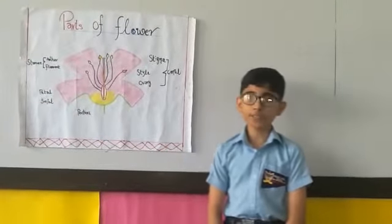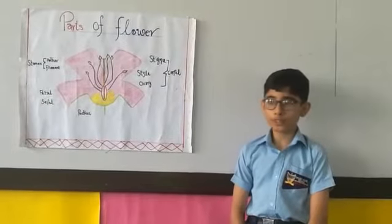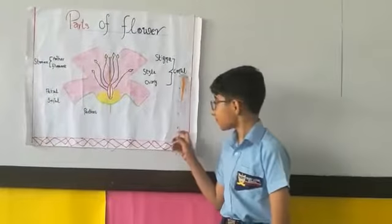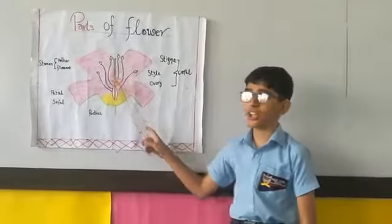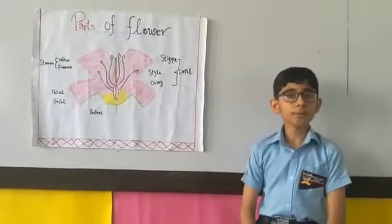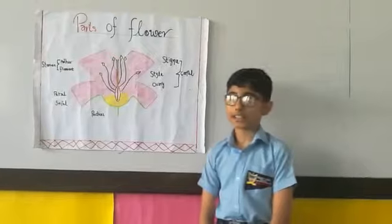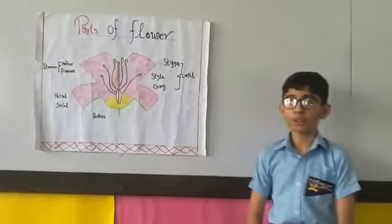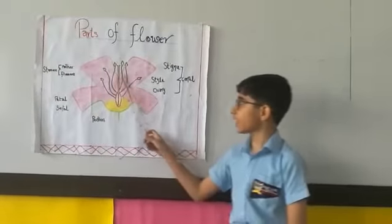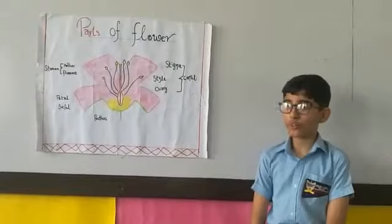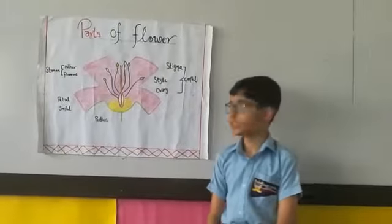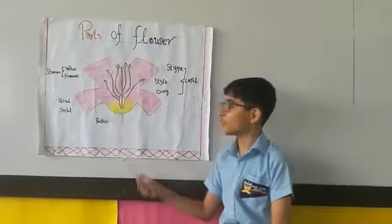Carpel. It is a female part of flower. It contains stigma, style, and ovule. Stigma property is a stigma, pollen. Style is connected to stigma. Ovules are produced in ovule.